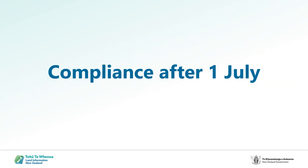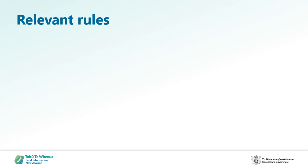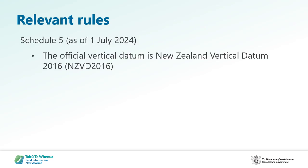I'll start off with the main changes that will happen to CSDs after the 1st of July. On the 1st of July, Schedule 5 of the Cadastral Survey Rules changes so that the only official vertical datum is NZVD 2016.